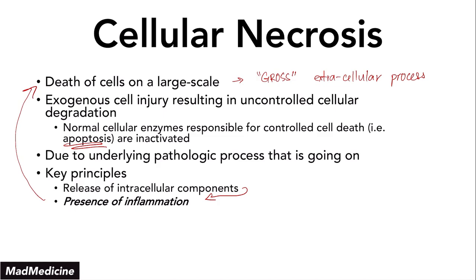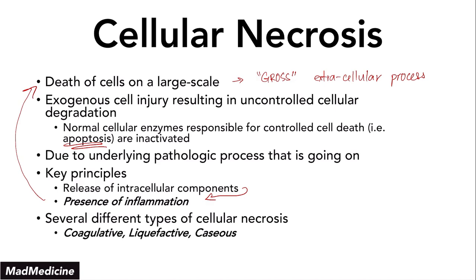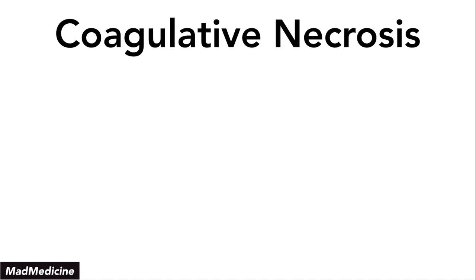Now there are several different types of necrosis that occur. In this lecture, we're going to be discussing the first three of six: coagulative, liquefactive, and caseous necrosis. We picked these three because they're very closely related. The other three — gangrenous, fat, and fibrinoid — we are going to discuss in part two. So with that being said, let's dive right in and talk about coagulative necrosis.